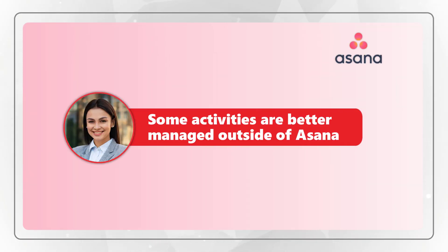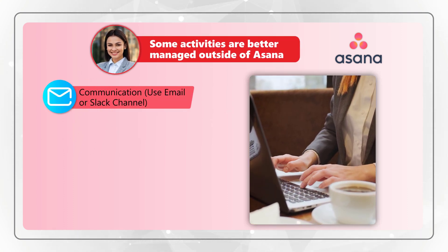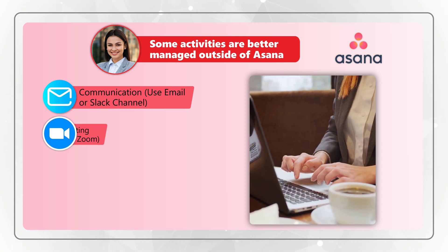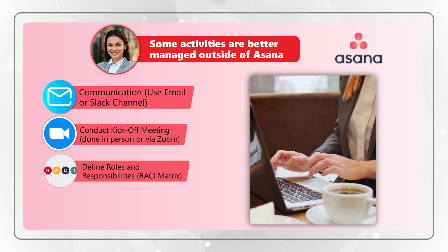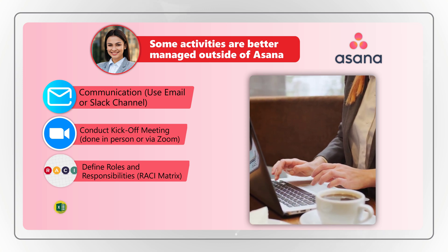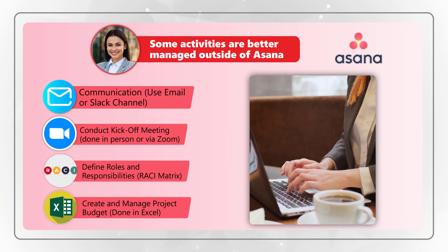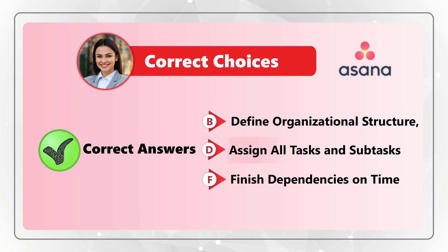Some activities are better managed outside of Asana. For communication, you can use email or create a new Slack channel. For the kickoff meeting, you can do it in person or using Zoom. The best tool to manage roles and responsibilities is a RACI matrix — responsible, accountable, consulted, and informed. And to create and manage a project budget, there is no better tool than Microsoft Excel. So the correct answers are choices B — define organizational structure — choice D — assign all tasks and subtasks — and choice F — finish dependencies on time. Do you have a better way to solve it? Please post your answer in comments.